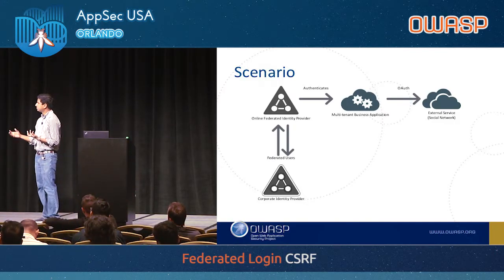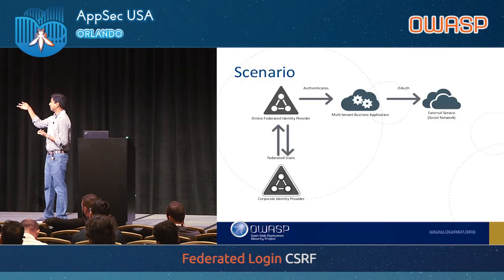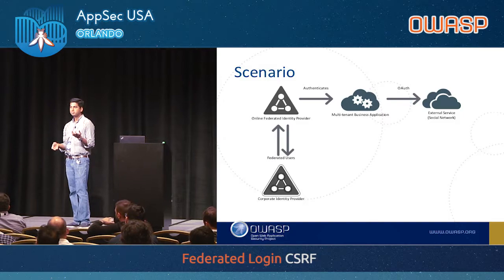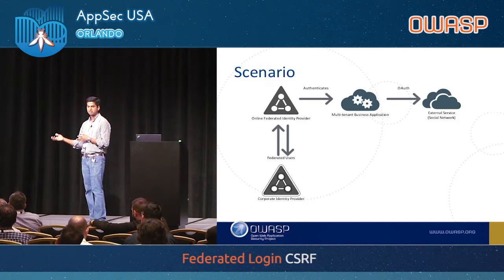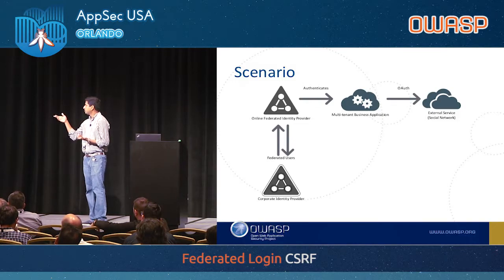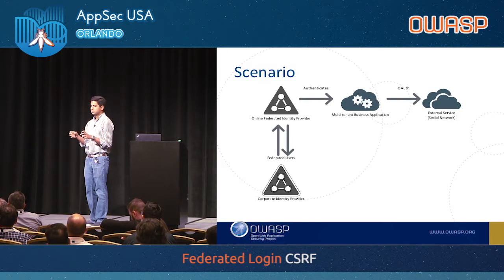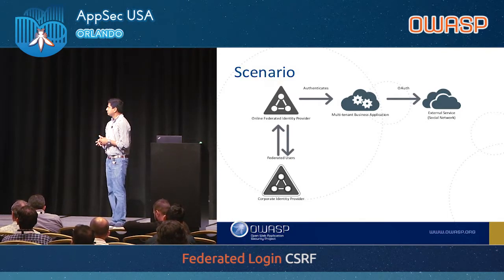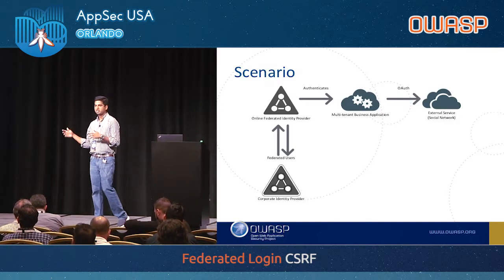There are more and more business applications that try to link identities together. In this scenario, you have a multi-tenant business application — meaning the same service serves customers from different organizations, like a company called Contoso and another called Fabricam, both served by the same application. These identities are federated using corporate identity: a Contoso user logs into their corporate identity, gets a federated token, and talks to the business application. They are also linking an external social network using OAuth. This is the basic scenario where Federated Login CSRF might be a problem.